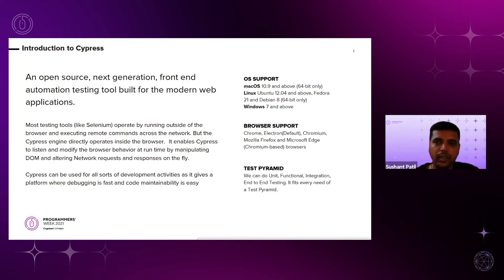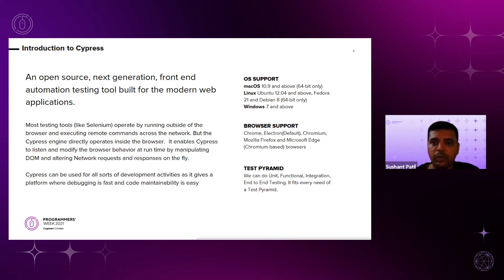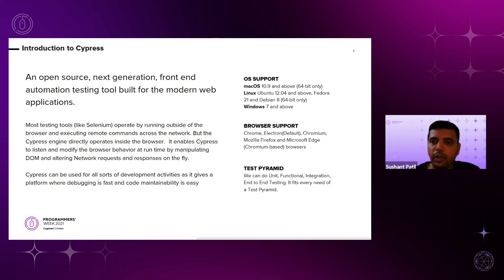For browser support, Cypress provides support for all Chromium-based browsers because Cypress and the modern applications built for it basically follow the Chromium architecture. Along with Chromium browser support, it also supports Electron. Electron is the default browser — if we don't specify any browser in the command line interface, Electron is used by default. Chromium, Firefox, and Edge are the other browsers that Cypress supports.